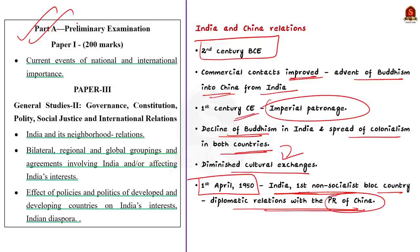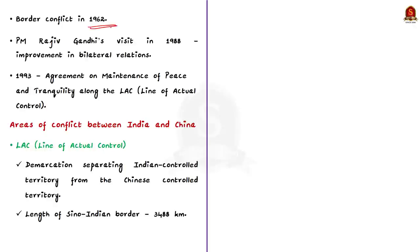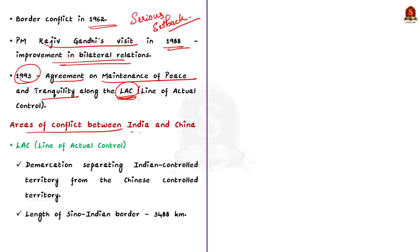While the India-China border conflict in 1962 was a serious setback to the ties between the two countries, the visit by Prime Minister Rajiv Gandhi became a landmark visit in 1988 because it began a phase of improvement in bilateral relations. And in 1993, an agreement was signed. This was about the maintenance of peace and tranquility along the line of actual control, that is the LAC. This LAC is on the India-China border area. So, this agreement further improved the bilateral ties.